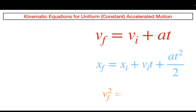The last of the three is VF squared equals VI squared plus 2A delta X, where VF squared is the final velocity squared, VI squared is the initial velocity squared, A is the acceleration, and delta X is the displacement. These three equations are very important for you to remember for your MCAT exam.